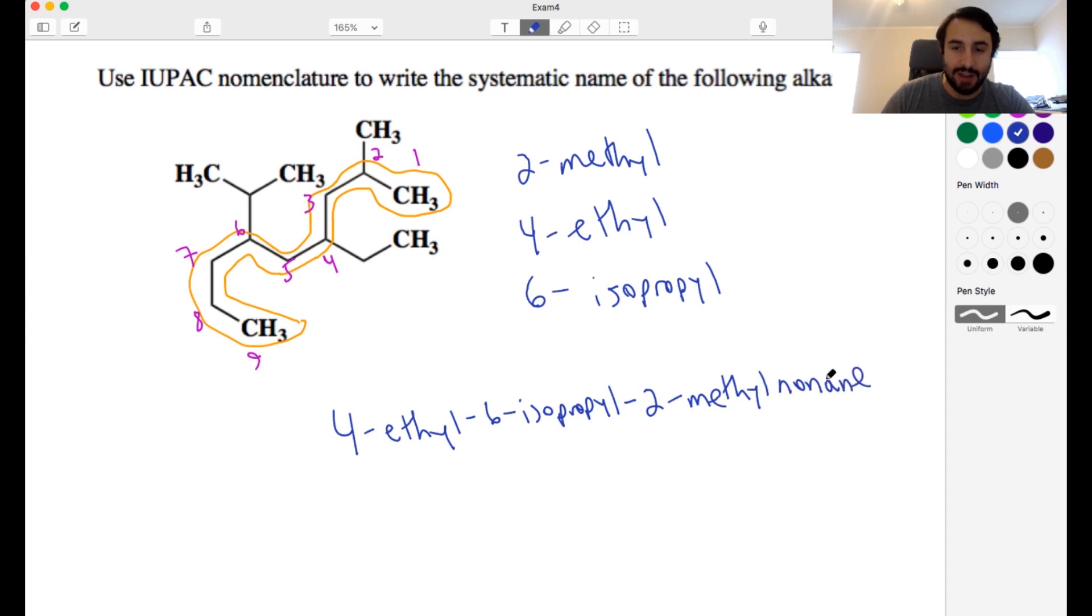So we're gonna say four ethyl six isopropyl two methyl nonane. Nonane for the nine carbons. And one quick point we have to remember that I for iso we do count the I in the alphabeticity. So it is I before M rather than P.